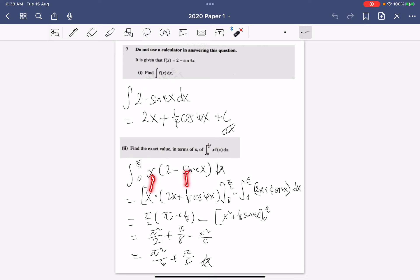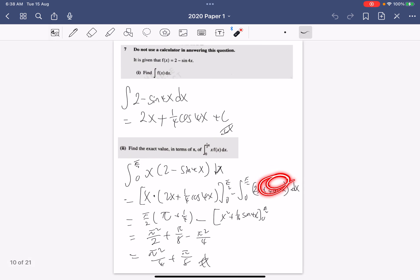So keep the integrated chunk, you get this minus integrate. So you integrate already, you keep there, then differentiate x which is 1, so there's nothing. Then this part you can integrate normally, so then you just get this. And you simplify, you should get pi squared over 4 plus pi over 8.